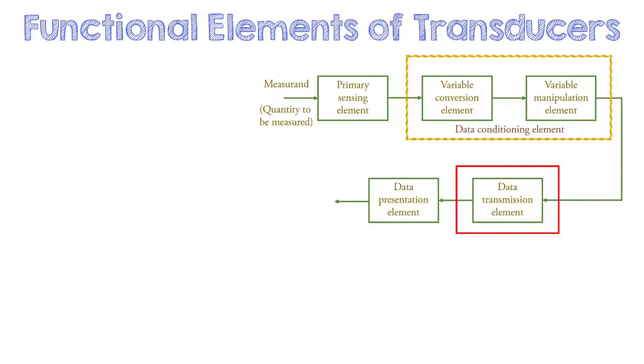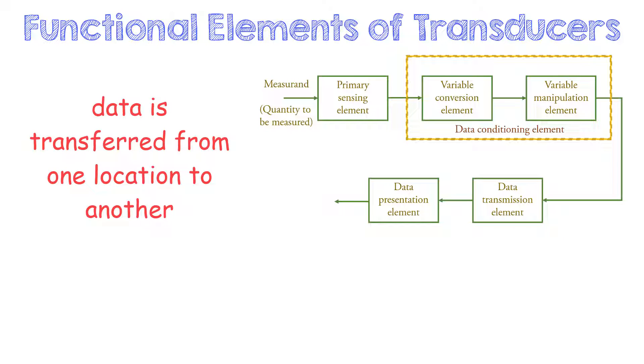The next element is the data transmission element. This block is responsible for transferring data from one location to the desired location. The transmission parts that can be used are pipes, electrical cables, or radio links.